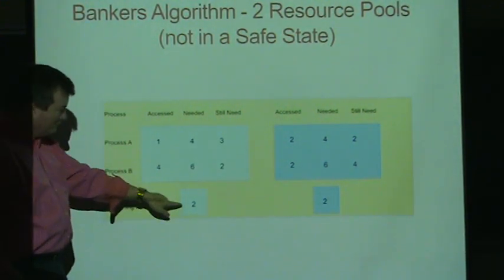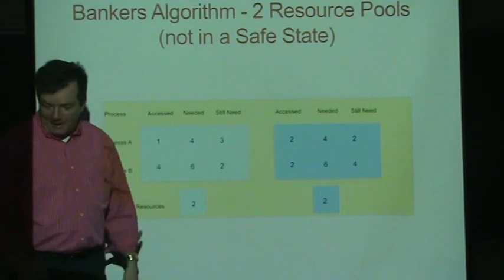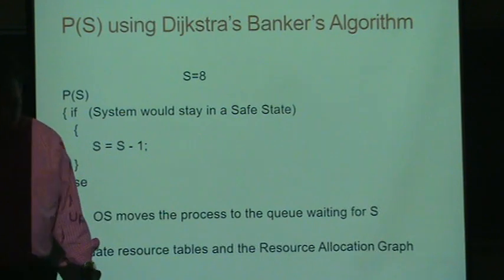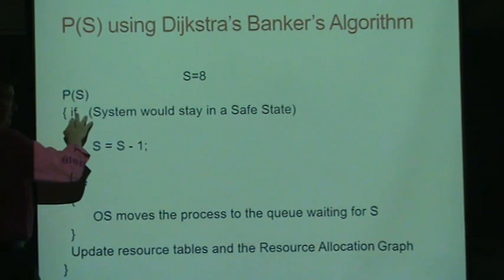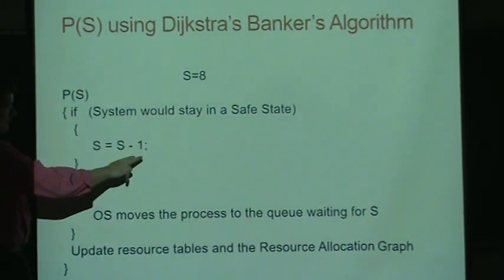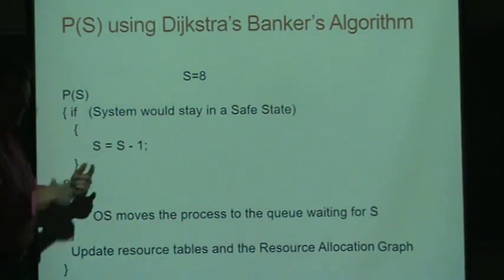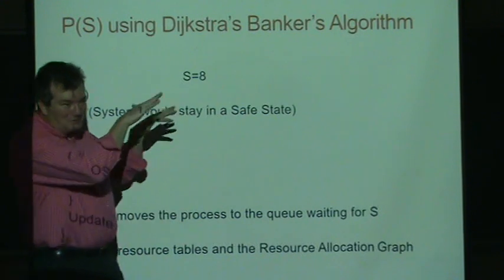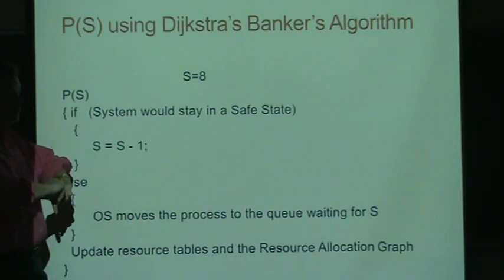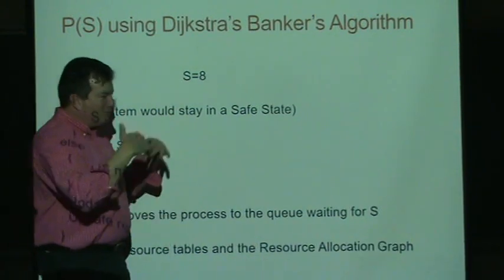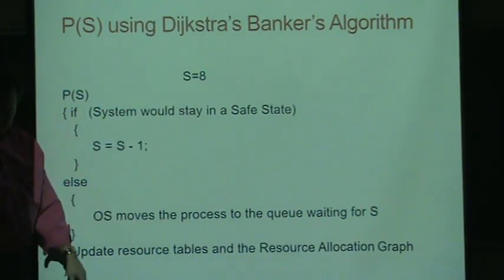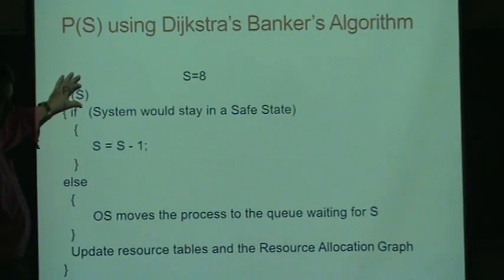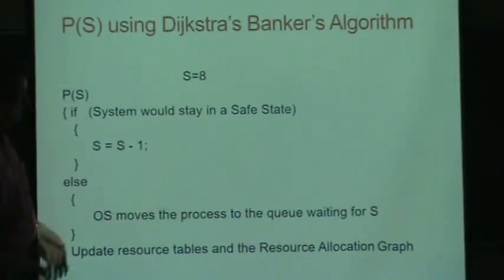We're not in a deadlock state yet, but we're in an unsafe state — the OS no longer has control to guarantee both processes finish. We gave away too much. So we want to code up Dijkstra's algorithm to take all of this into account. When a process asks for a resource, we check: would giving this out keep the system in a safe state? If yes, give it out; otherwise, don't. The P function keeps growing — this is how operating systems really implement it.